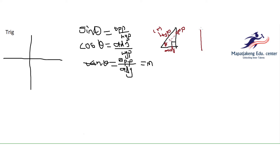Let's go through the process again. Let's say you have another right-angle triangle and your angle is here — then the side facing the angle is going to be your opposite. Your opposite changes depending on where the angle is. The side the 90 degrees is facing is always the hypotenuse, and the third remaining side is your adjacent.